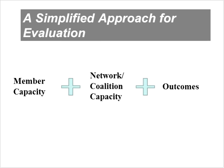Based primarily on the work of Provan and Milward, as well as others, we realized we could simplify the evaluation approach for interorganizational relationships into three distinct parts. One is membership capacity — what do individual members bring to the interorganizational relationship? Two is the capacity of the network or coalition itself — what capacity does it have to operate? And three is the more conventional outcomes focus — what did it actually accomplish by being in existence?